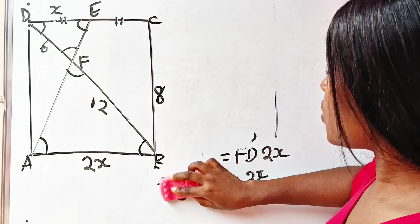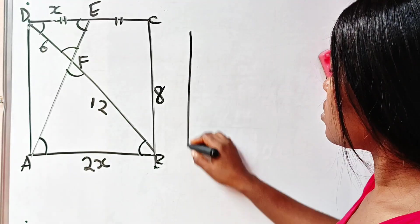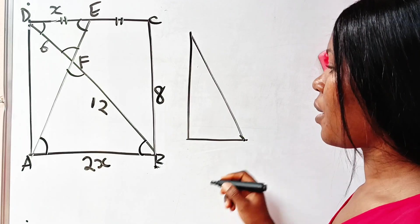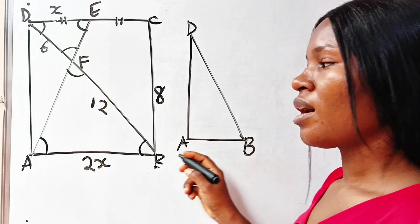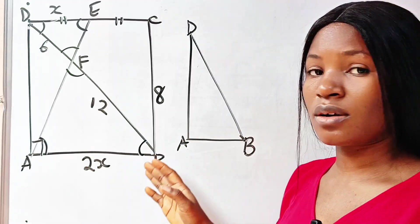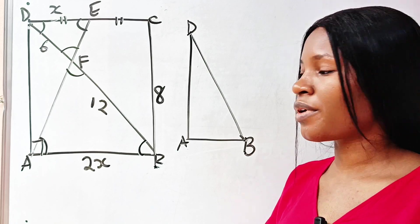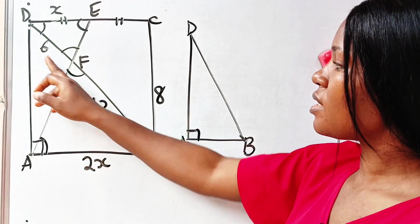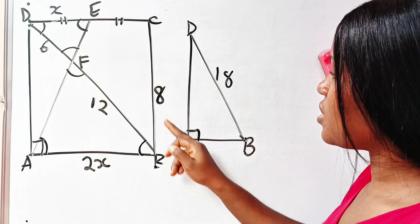Now we have FD to be 6. Let us draw this triangle out. Let us draw triangle DAB out. So this is D, this is A, and this is B. And definitely angle A is 90 degrees because this is a rectangle. So as long as this is a rectangle, the inner angles are 90 degrees. So we have 90 degrees here.